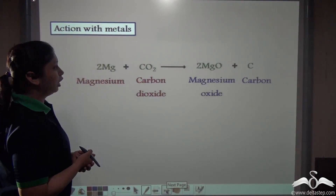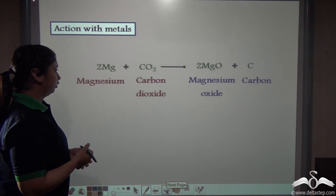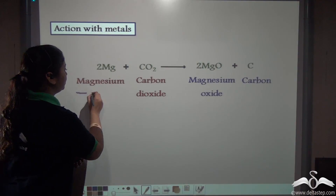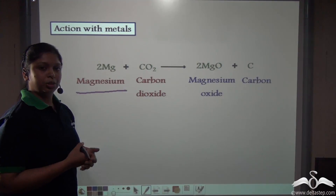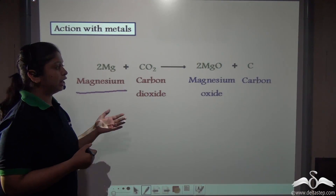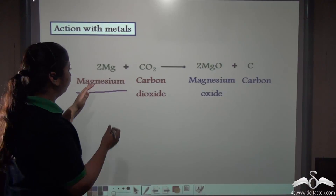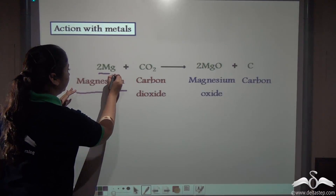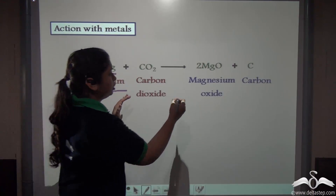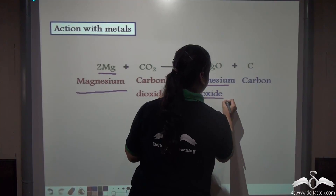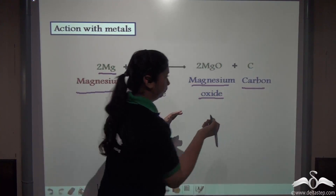Now, if you treat carbon dioxide with a metal — we have taken magnesium here — what you get is the corresponding metal oxide. So with magnesium, magnesium oxide is produced along with carbon.